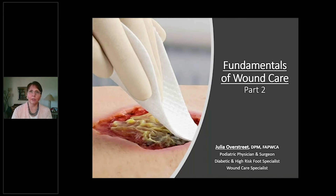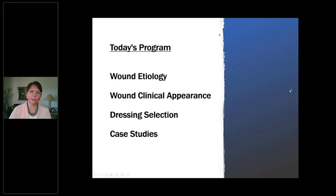This will give you some sense of what wound care for chronic wound patients is all about. In today's program we're going to cover wound etiology — what is behind the wound: vascular problems, diabetes, trauma, that sort of thing. The next two issues are wound clinical appearance and dressing selection. We're going to quickly refresh those issues from the first video without going into as much depth as we did there.